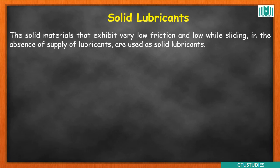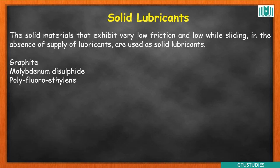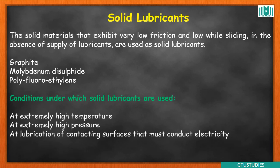Solid lubricants are used in conditions where liquid lubricants cannot be used — for example at very low temperatures where liquid lubricants would solidify, or in very high temperature or very high pressure conditions. They are also used when the contacting surface must conduct electricity, since solid lubricants like graphite are electrical conductors. Common solid lubricants include graphite and molybdenum disulfide (MoS2).